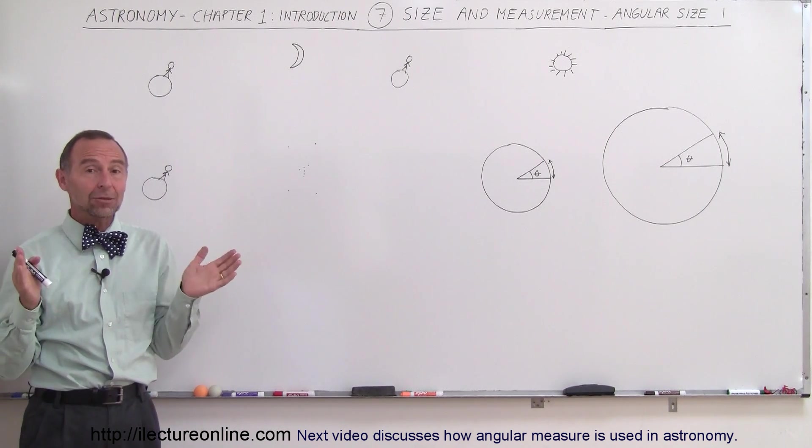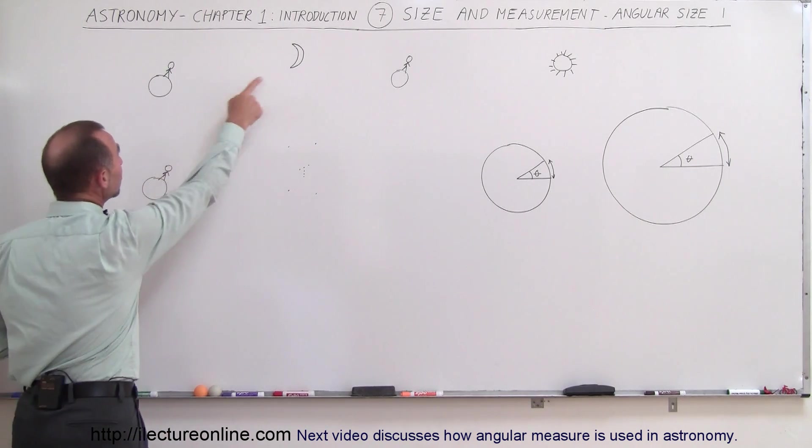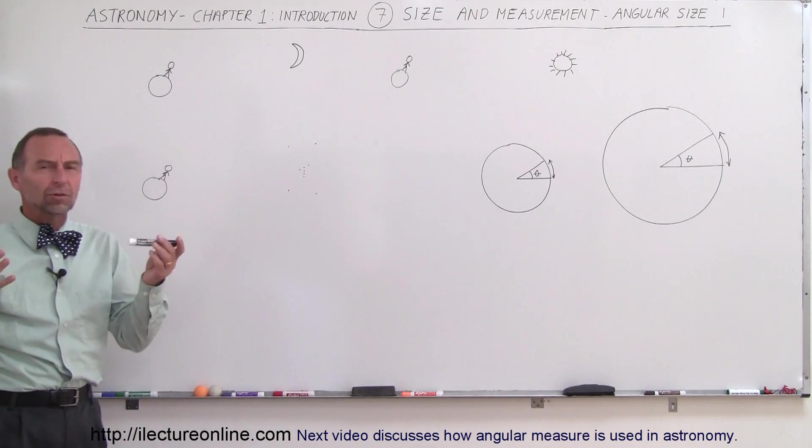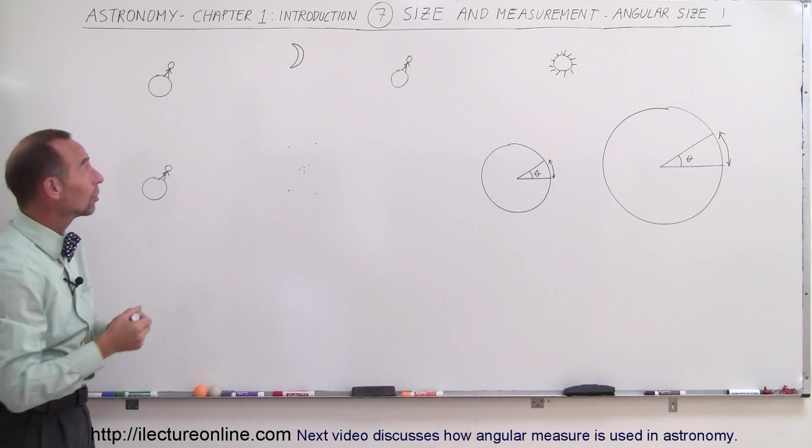But one thing we can do is measure the angular size of objects. For example, let's say that we are looking at the moon and wonder, well how big does the moon look? It looks about that big, but really the way to measure it is to say, okay...